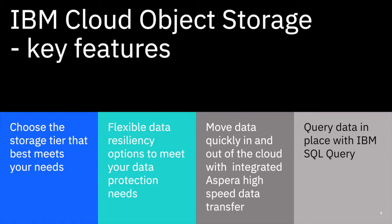So let's look at IBM Cloud Object Storage and understand the key features. It gives you a range of storage tiers that allow you to best meet your needs — we'll talk more about those shortly. Because you want your data to be stored reliably, we give you a range of different resiliency choices to meet your particular availability goals or local data restrictions. You can move data in and out of the cloud quickly using our Aspera high-speed data transfer technologies. And for data where there is some structure, you can query data in place with a feature called IBM SQL Query.